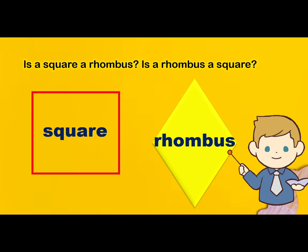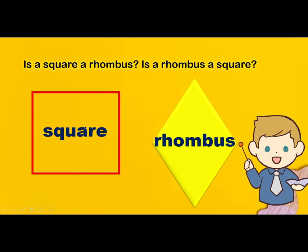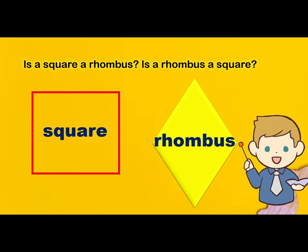Is a square a rhombus? Is a rhombus a square? The difference between a square and a rhombus is that all angles of a square are right angles, but the angles of a rhombus need not be right angles. So, a rhombus with right angles becomes a square. We can say every square is a rhombus, but all rhombuses are not squares.